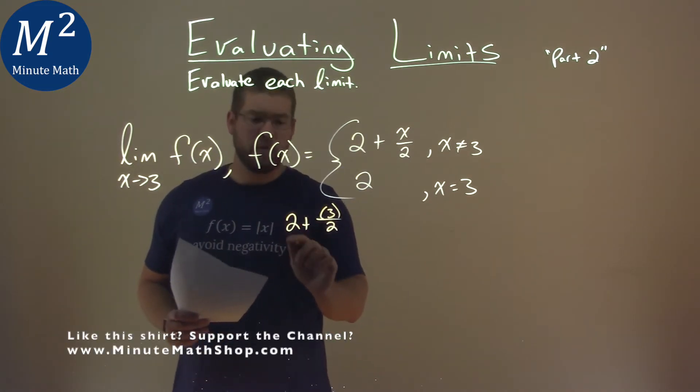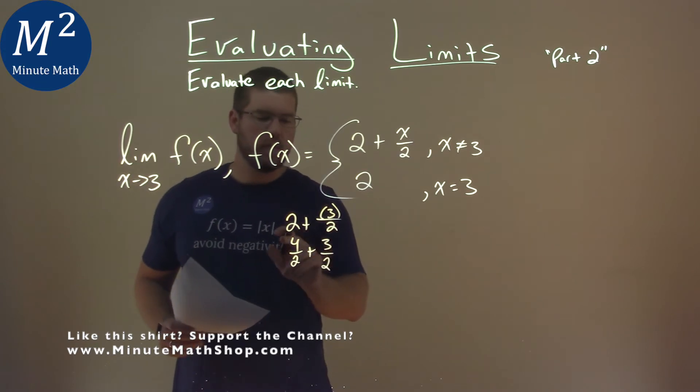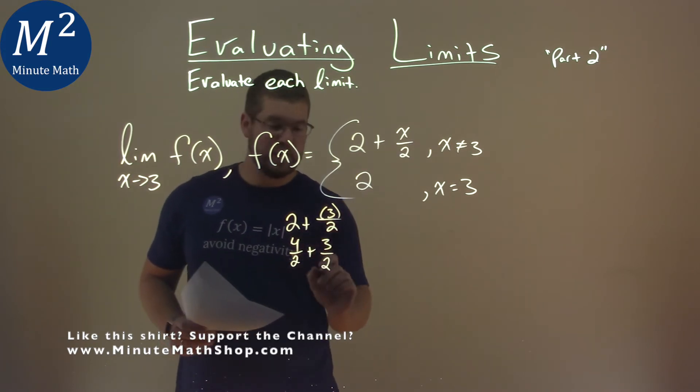2 can be written as a fraction as 4 halves plus 3 halves. 4 halves plus 3 halves comes out to be 7 halves.